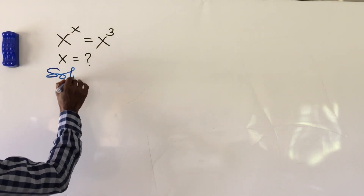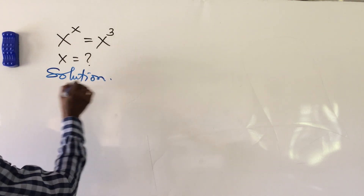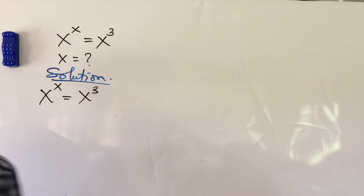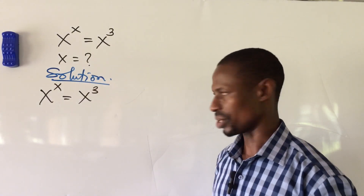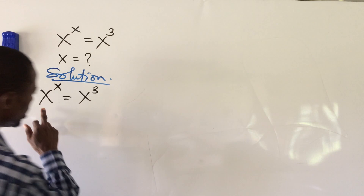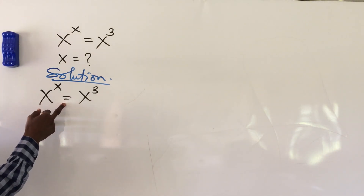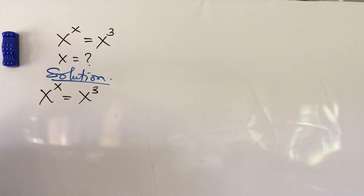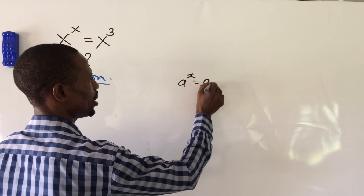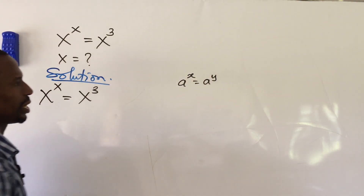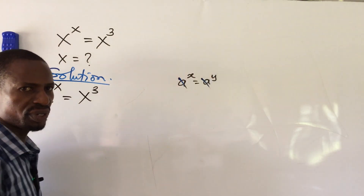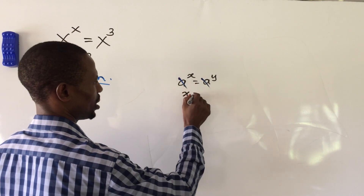Now let's go to this challenge. The question is: x to the power of x equals x to the power of 3. Looking at this question, it's easy to solve at a glance using the rule that when the bases are the same and you have an equality sign, you equate the exponents. So if a to the power of x equals a to the power of y, then x equals y.